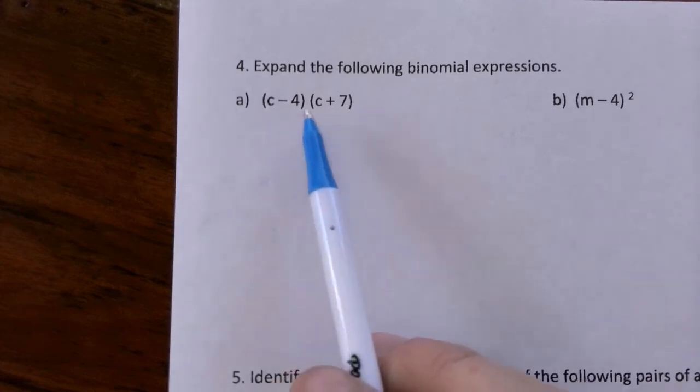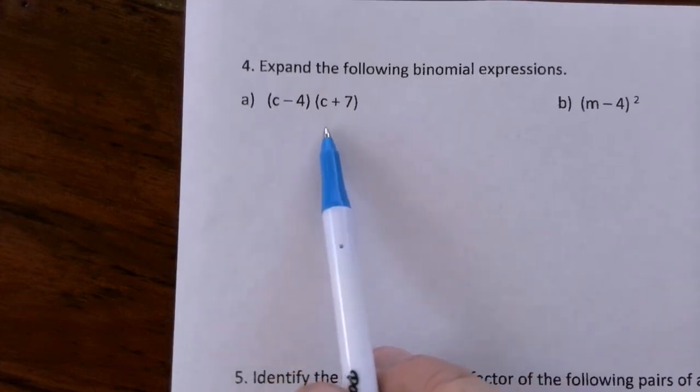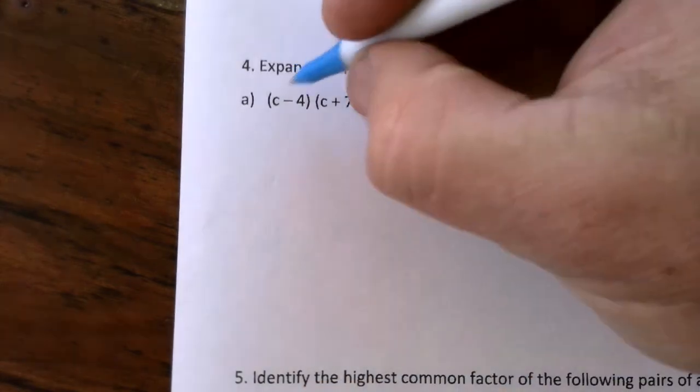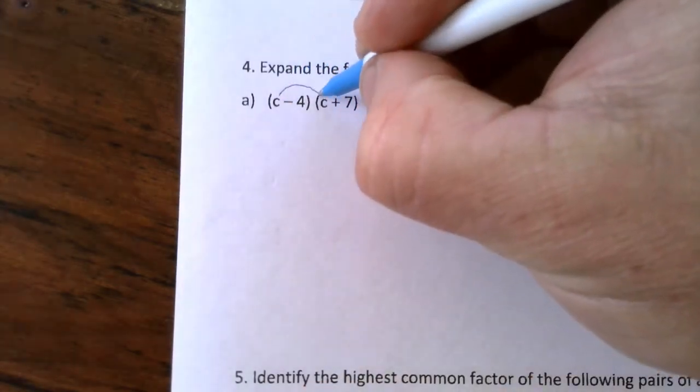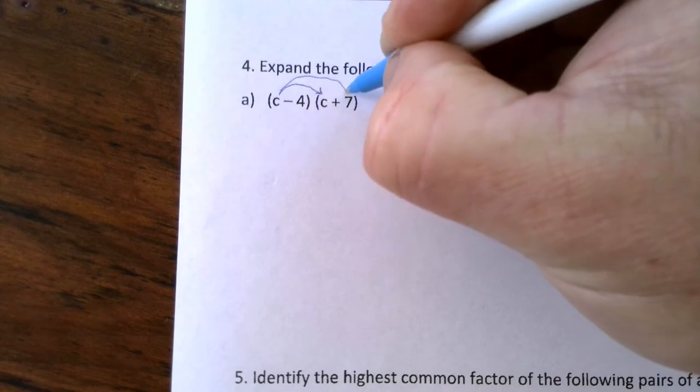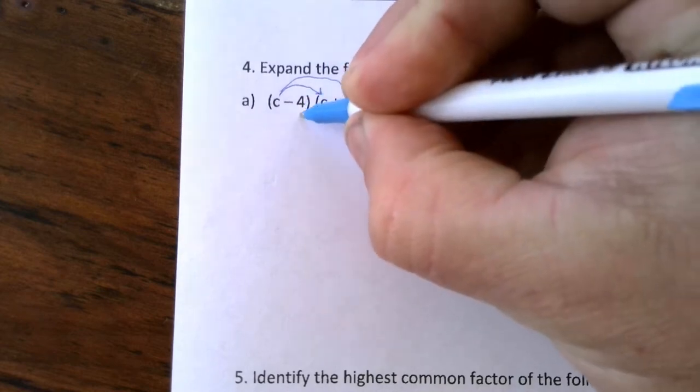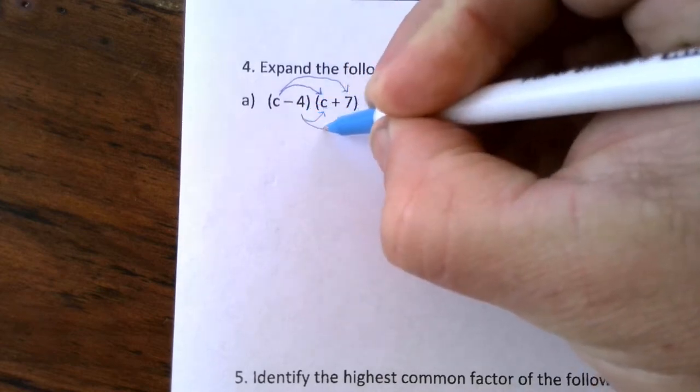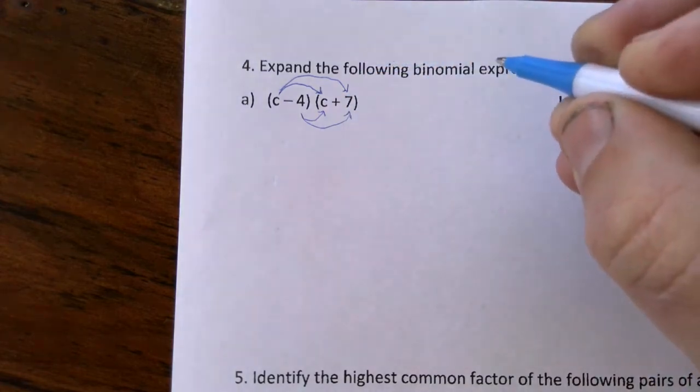Question four is using binomials, and these have a little system as well that we always follow. So this times this, then this times this, then we jump to the second number. This times this, then this times this. If we follow the system we'll never go wrong.